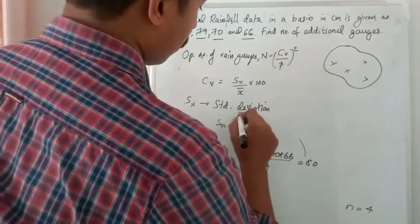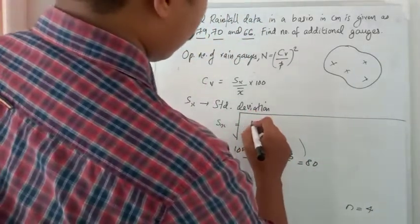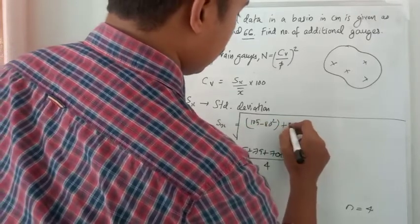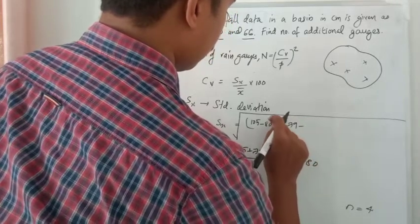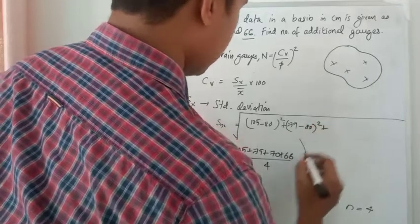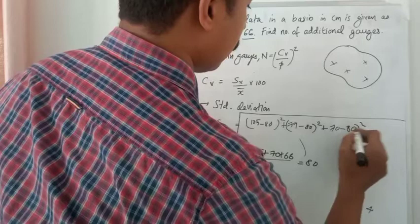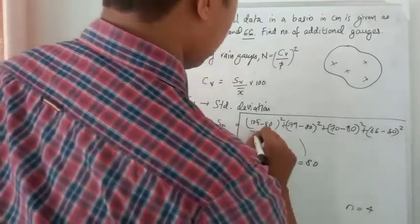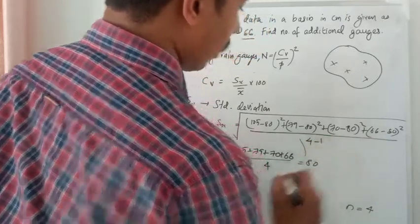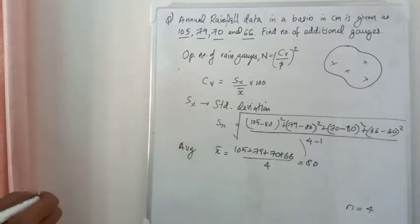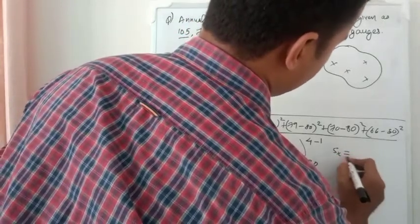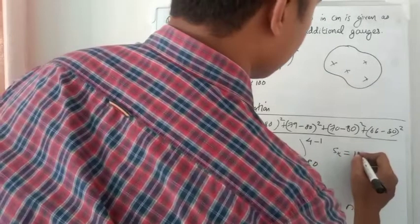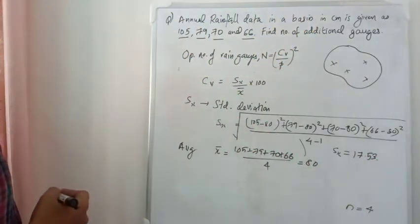Now SX equals the whole root of: (105 − 80)² + (79 − 80)² + (70 − 80)² + (66 − 80)², all divided by N−1 = 4−1 = 3. After calculating that, the standard deviation value SX comes out to 17.53.